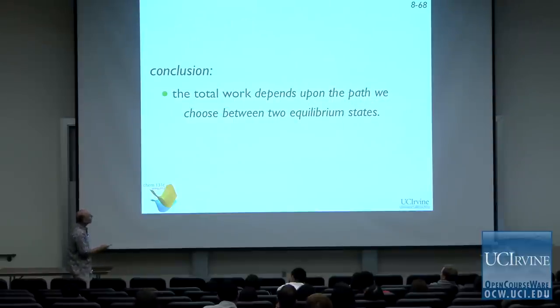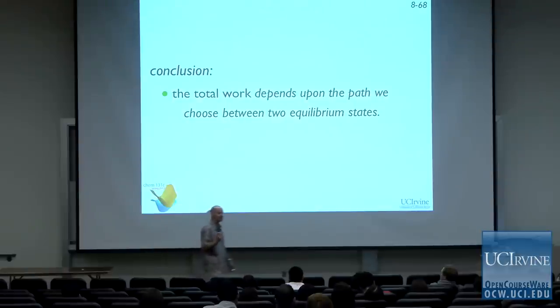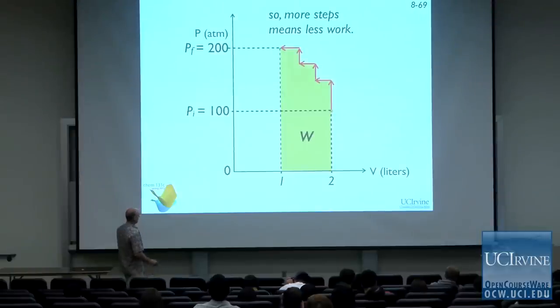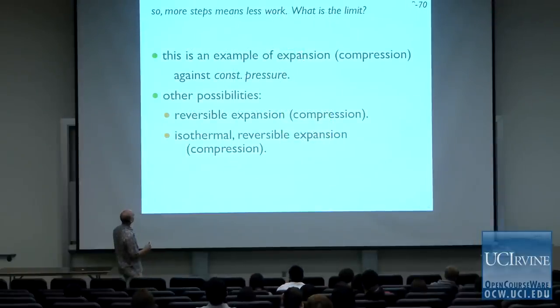The total work depends upon the path chosen between two equilibrium states — this is a very important point. The amount of work required to traverse from an initial equilibrium state to a final equilibrium state is not a conserved quantity; it depends on the path taken. It is a path-dependent quantity, and that is a key message of thermodynamics. More steps means less work.